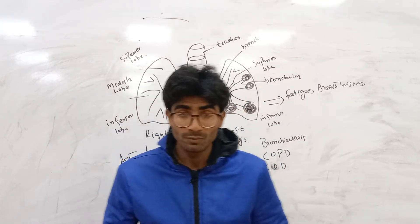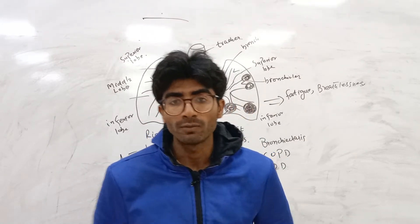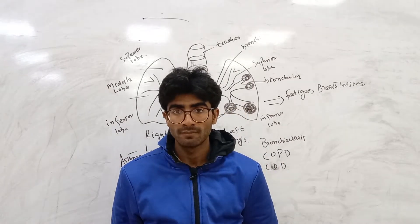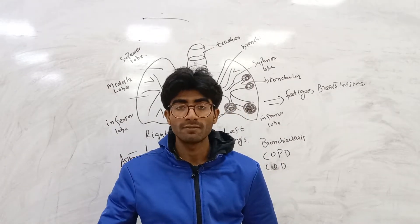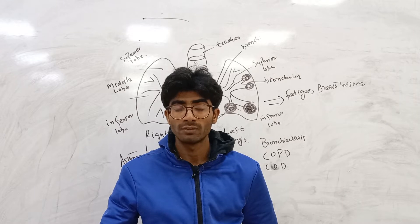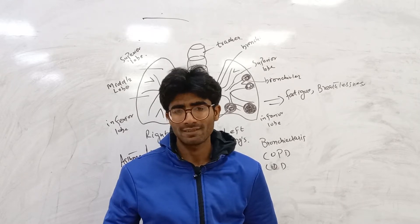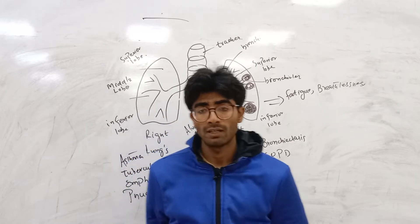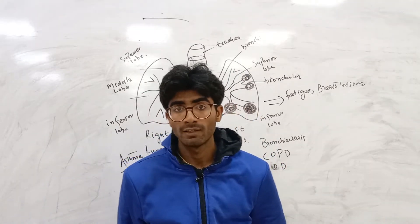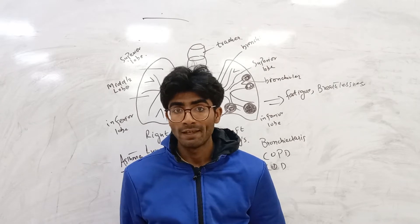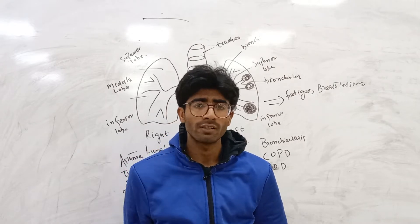Assalamualaikum guys, today we are going to talk about the respiratory system. Our respiratory system consists of mouth, trachea, larynx, pharynx. After the trachea we have lungs, and today I want to explain what's the structure of the lungs and which disorders.